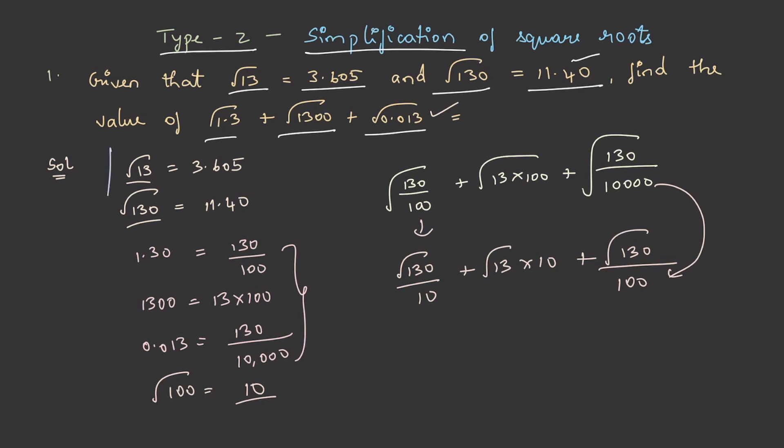Let us get back to the question. The data given is √13 = 3.605 and √130 = 11.40. Let us substitute here.